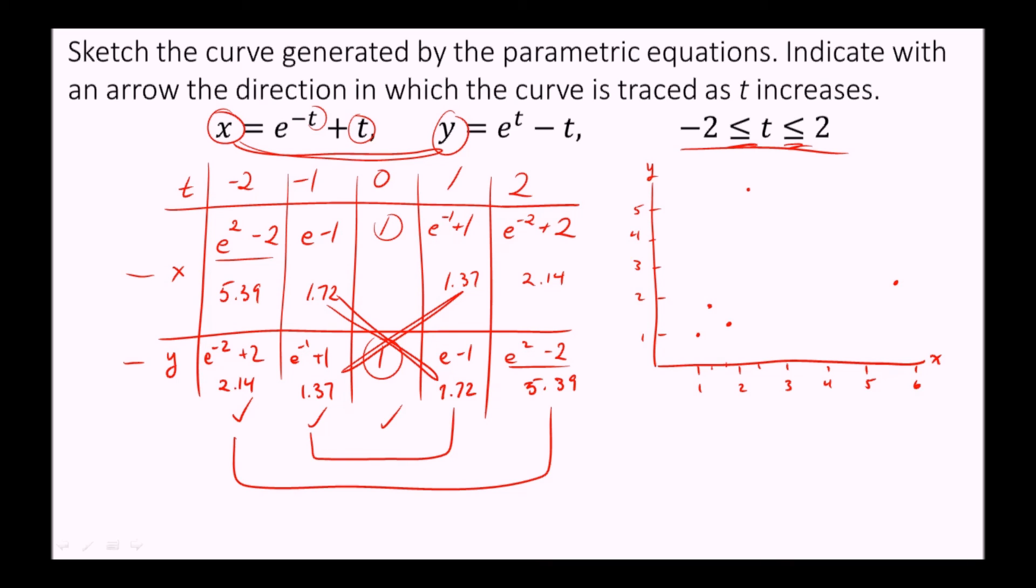So now we have these dots, and we know the order in which we placed them. And the question wants us to indicate with an arrow the direction in which the curve is traced as t increases. So t went from negative two up to two. When t was negative two, we plotted this point. When t was negative one, we plotted this point. When t was zero, this point. t was one, this point. And t was two, this point.